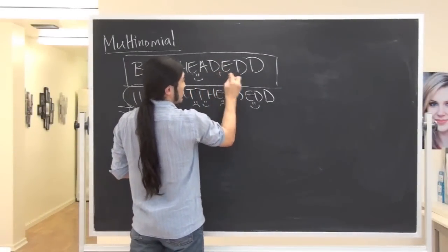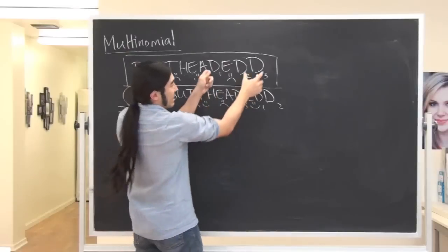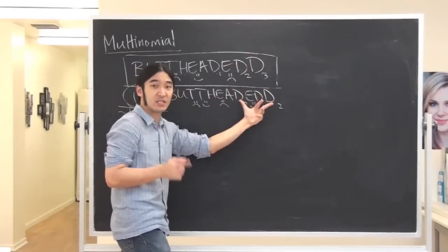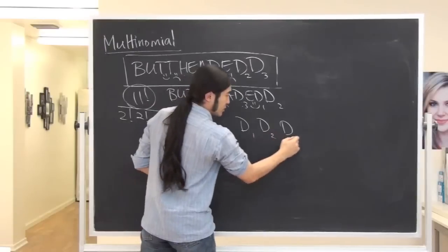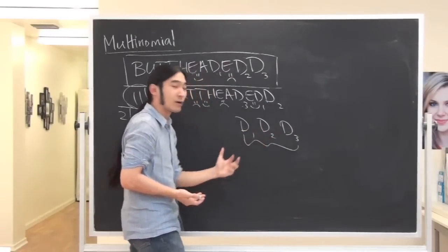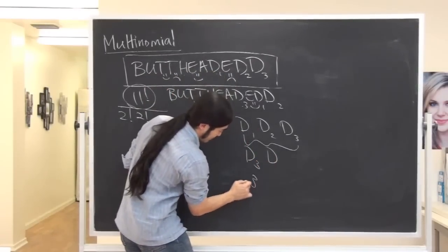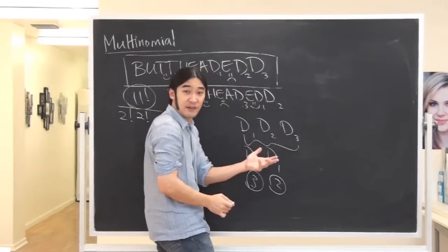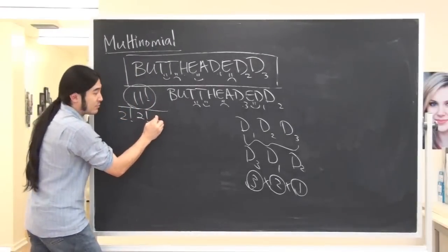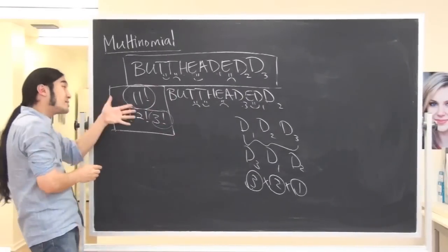Now the final one — let's look at D. I have D1, D2, and D3. Over here we might have D3, D1, and D2. Everyone agree? We counted those setups as different because we moved the D's around, but you can't actually tell the D's apart. So how many ways can I overcount — how many ways can I pretend the D's are different when they're actually the same? Three choices for where the first D goes, two choices for the second, one choice for the final D. That's 3 times 2 times 1, so I've overcounted by 3 factorial. Not divided by 3, but by 3 factorial. And that's multinomial.